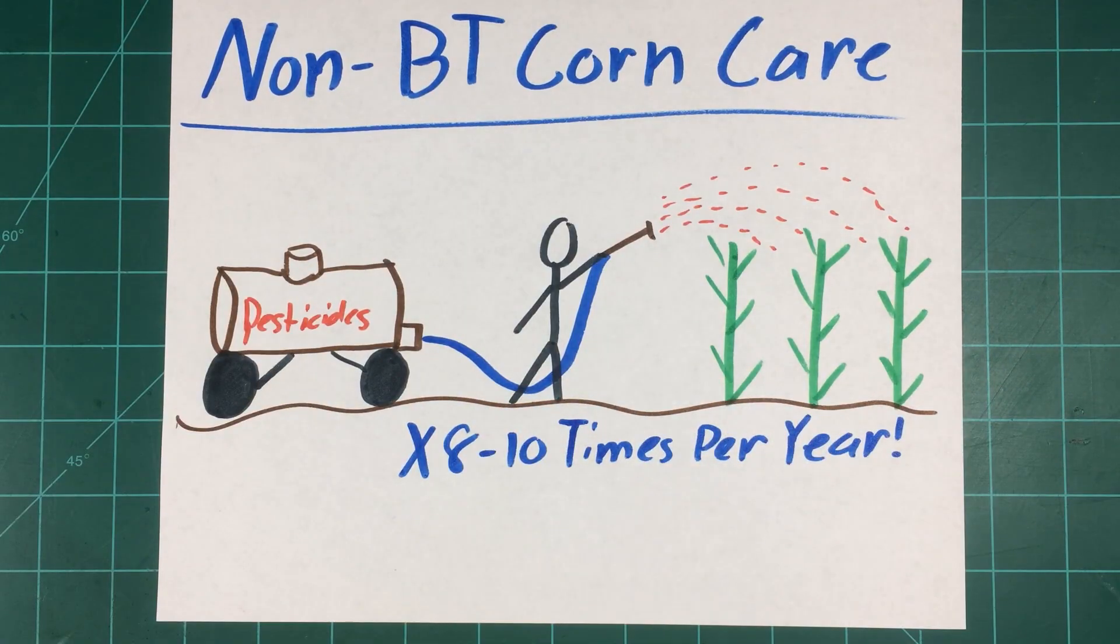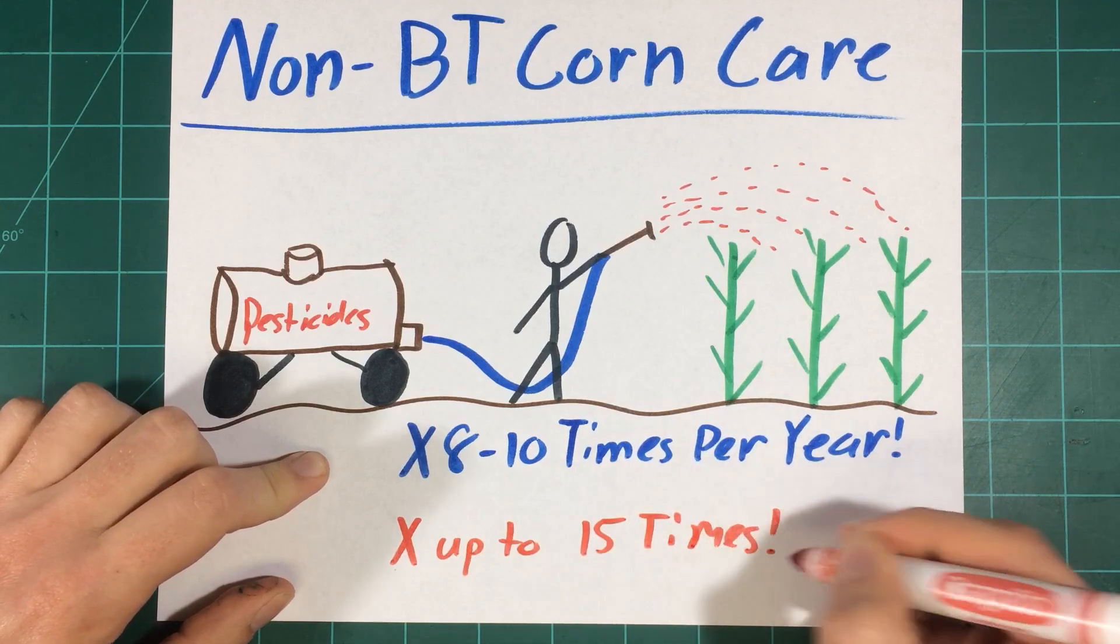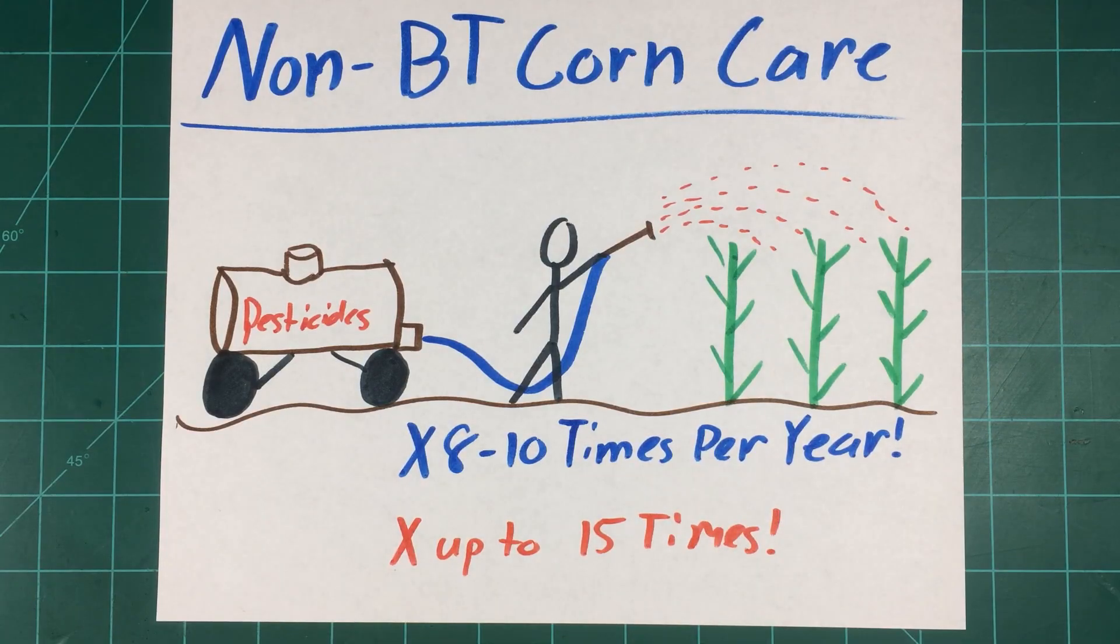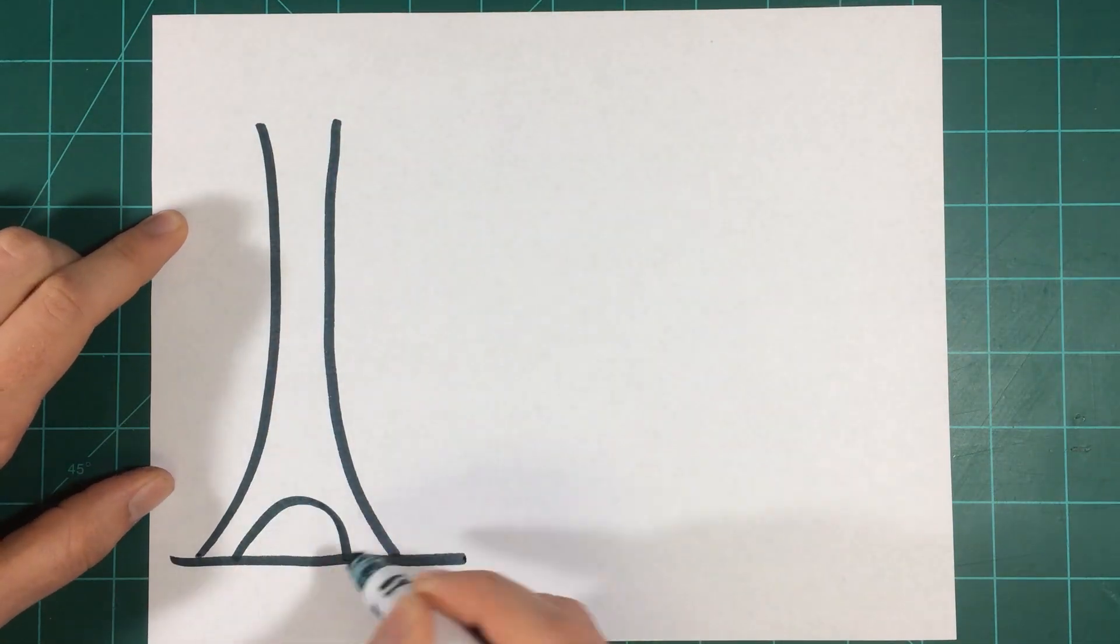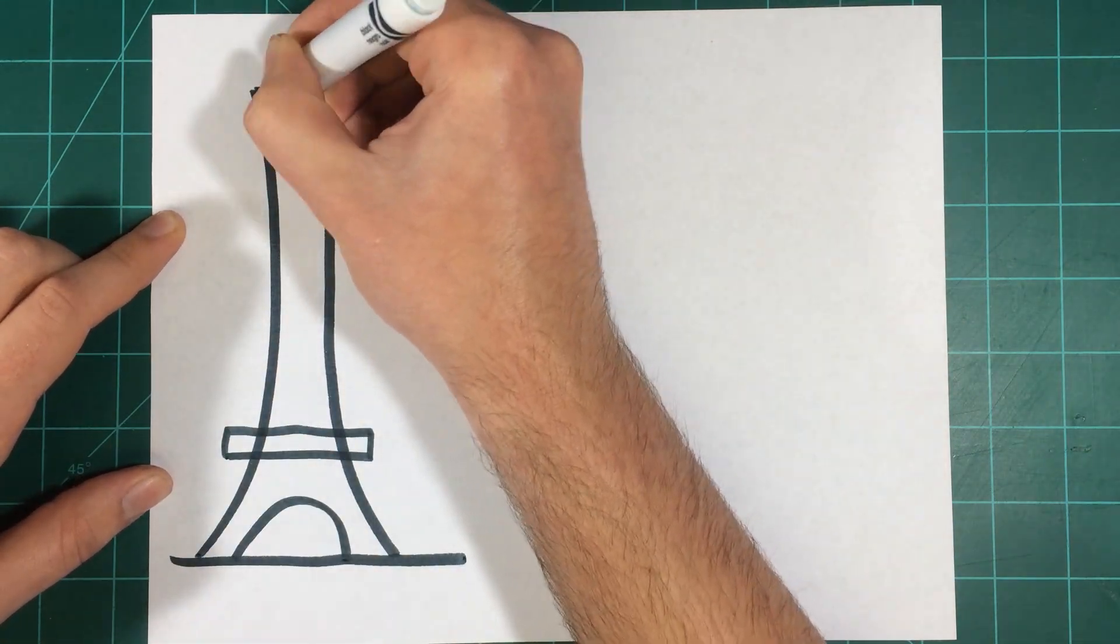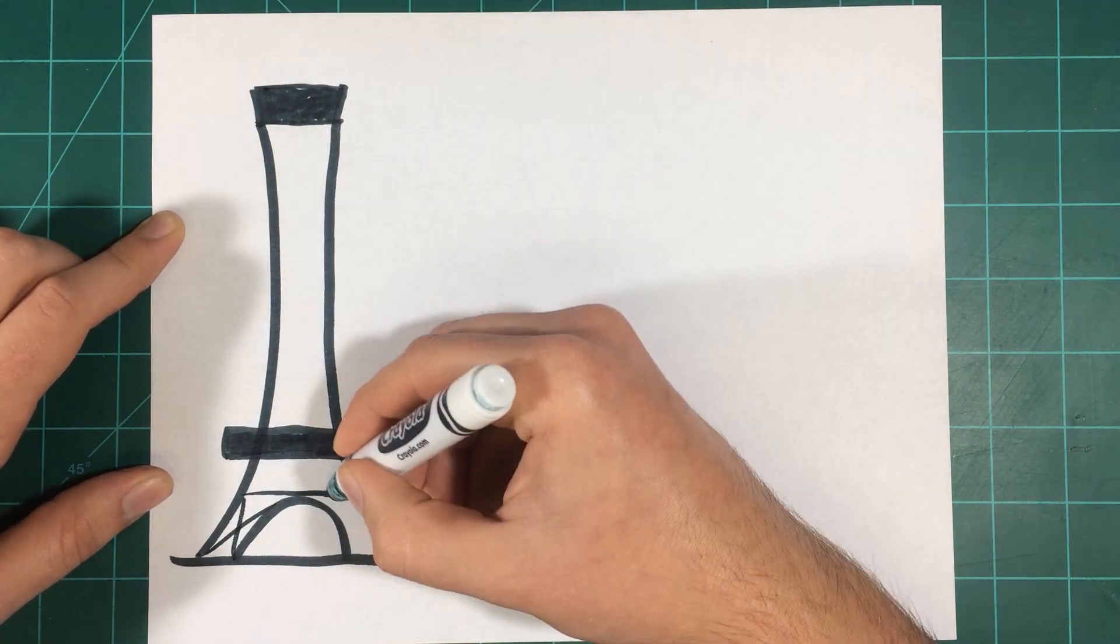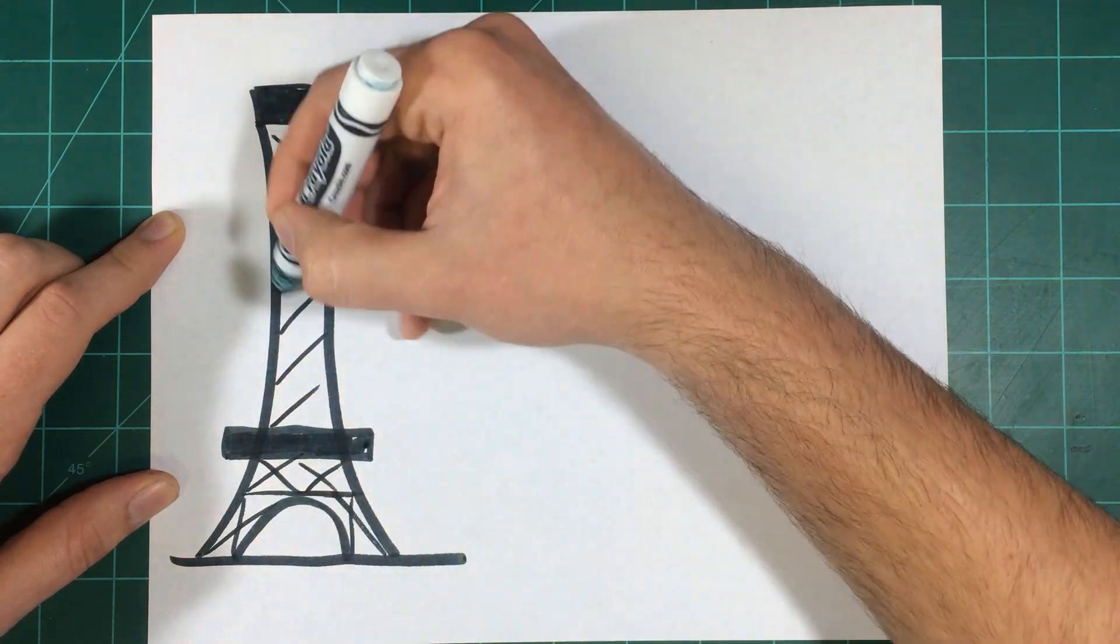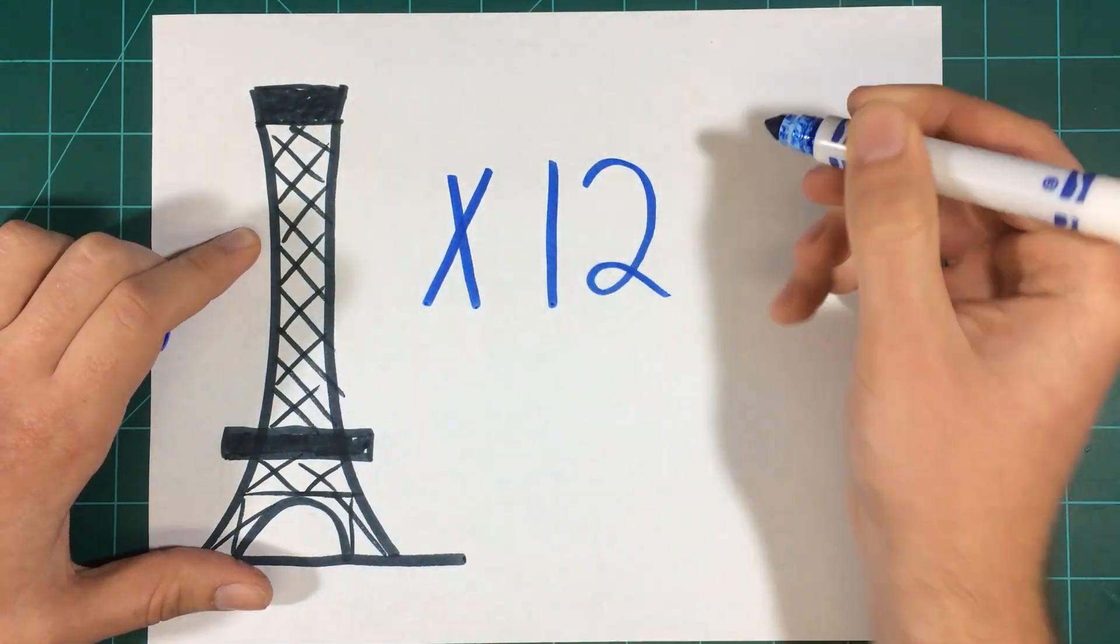Further south, the amount of pesticide sprays can be as high as 15 applications per year. Over this 20-year span, BT corn alone has resulted in 175 million pounds of insecticidal active ingredients not being applied to corn. That's the combined weight of 12 Eiffel Towers.